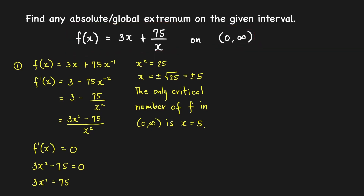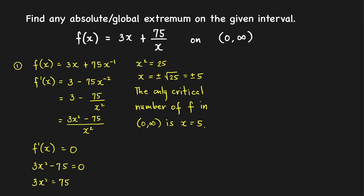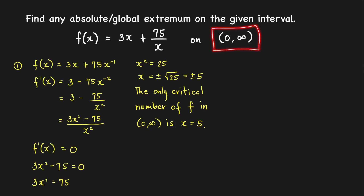To find critical numbers in (0, ∞), we set the derivative equal to 0, giving 3x² − 75 = 0, so x² = 25, and x = ±5. Only x = 5 lies in the open interval (0, ∞). So we have exactly one critical number in the given interval. Therefore, if we have a relative extreme value at this critical number, that local extreme value will be an absolute or global extreme value.